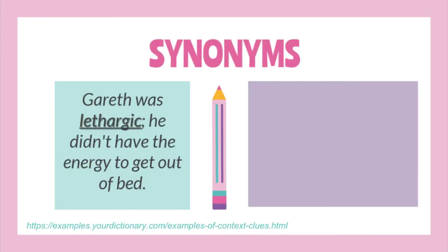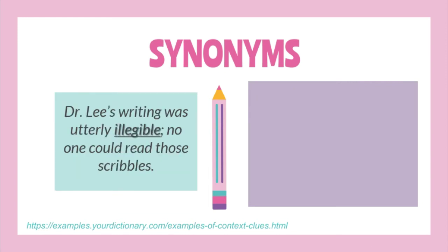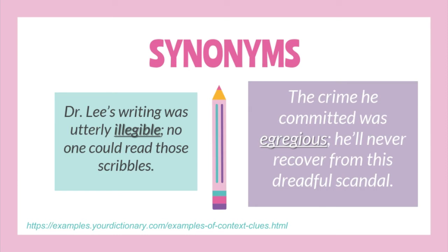Next: 'Garrett was lethargic — he didn't have the energy to get out of bed.' The clause 'he didn't have the energy to get out of bed' implies that lethargic means tired or sleepy. Also, 'The dates are listed in chronological order — they start at the beginning and end with the last event.' Thus, chronological means the sequence of time from the earliest to the most recent. And 'Dr. Lee's writing was utterly illegible — no one could read those scribbles.' No one could read implies that illegible means unreadable. Finally, 'The crime he committed was egregious — he'll never recover from this dreadful scandal.' The word dreadful is the synonym of egregious, meaning horrifying.